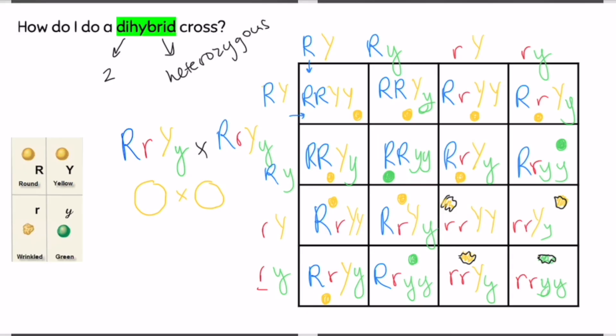So now I'm going to do my phenotype ratio. Genotype, there are a lot of different genotype options here. We can come back to that if you need it. But for my phenotype ratio, I'm going to count how many round yellow peas do I have? One, two, three, four, five, six, seven, eight, nine. So that's nine. How many round green peas do I have? I see three. How many wrinkly yellows? Three. And how many wrinkly greens? Just one. So if you're looking for the phenotype ratio of a dihybrid cross, it is nine to three to three to one. I hope this helps.